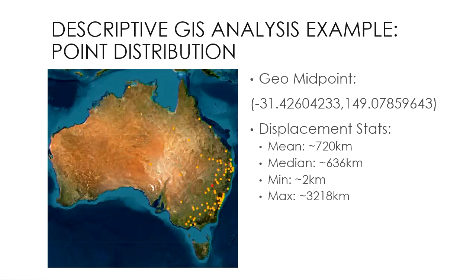Here's an example of descriptive GIS analysis: point distribution. On the map we see a distribution of points, and the red one is the geo midpoint — that's the average point, the center of mass essentially. We can see that the points are clustered on the eastern side of Australia, especially New South Wales and Victoria.